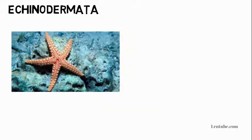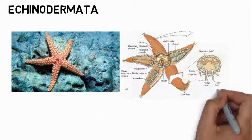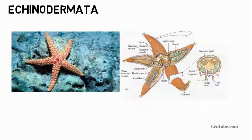Phylum Echinodermata: Their bodies are radially symmetrical. They have spiny skin. They are mainly marine animals. They are triploblastic, having three body layers. They have neither head nor brain, and their bodies are not segmented. They have tube feet used for movement. Examples: starfish, sea urchins, sea cucumbers, and brittle star.